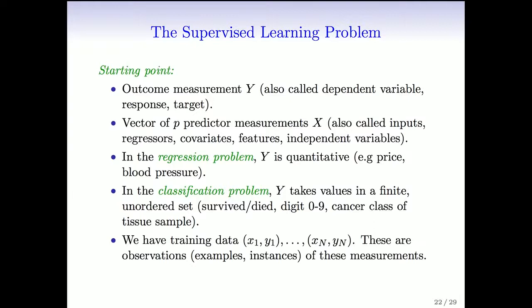We have training data pairs: x1, y1, x2, y2, up to xn, yn. Here x1 is a vector of p measurements, and y1 is usually a single response variable. These are examples or instances of these measurements.